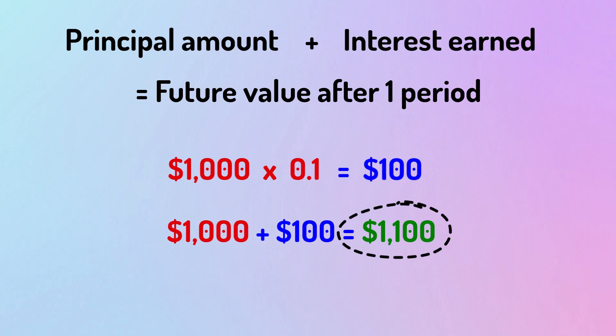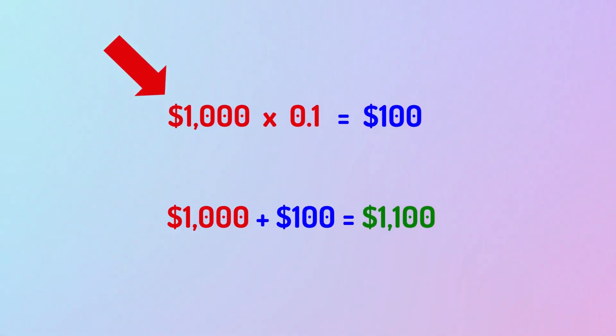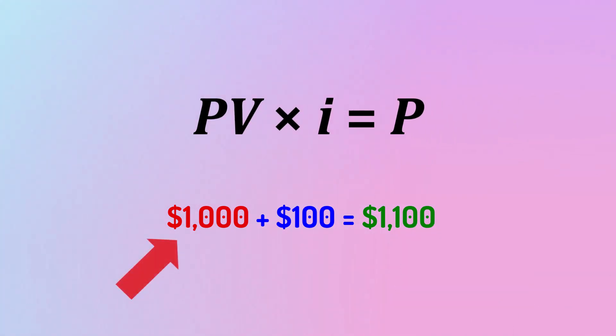Let's generalize these two equations using variables instead. For the first one, we will replace the investment amount with PV, replace 0.1 with I for interest, and the interest earned with P for portion. For the second equation, we take the present value of 1,000 and add it to the interest earned, which we denoted as P. Adding these two amounts gives us the future value of our investment after a single period.